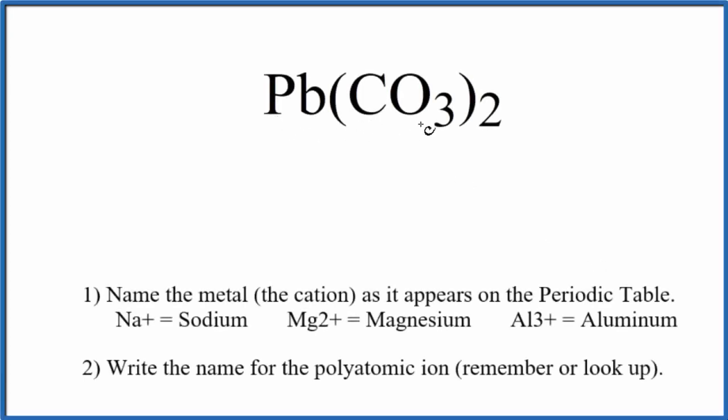To write the name for Pb(CO₃)₂, we first need to recognize this CO₃ here. This is the carbonate ion, it's a polyatomic ion, and we have two carbonate ions.